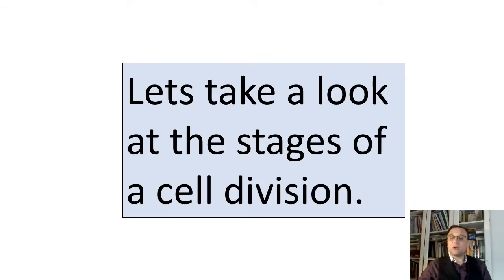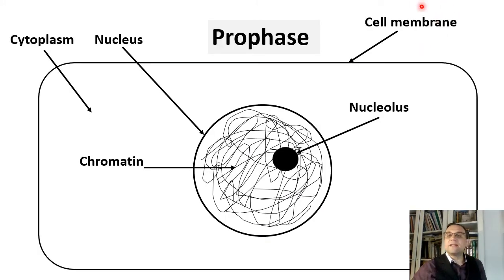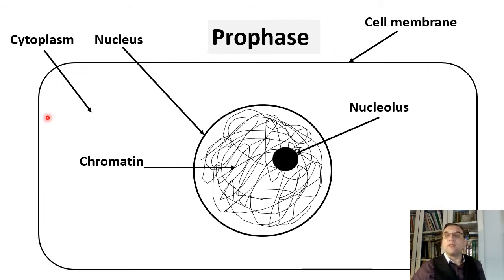Before continuing with the lecture, I would like you to look at all the stages of mitosis and cytokinesis. I want to remind you a few details about what you're going to see on the diagrams. A cell membrane is a thin membrane, a double layer of phospholipids enclosing the cytoplasm of the cell. Proteins control the passage of ions in and out of the cell.